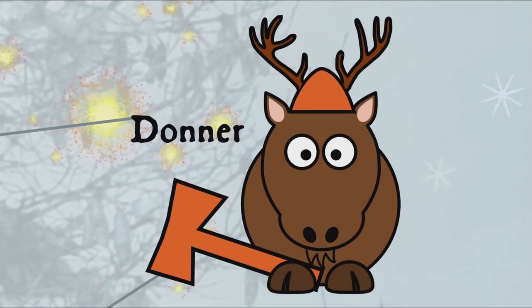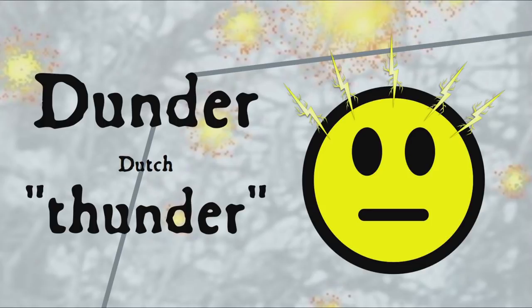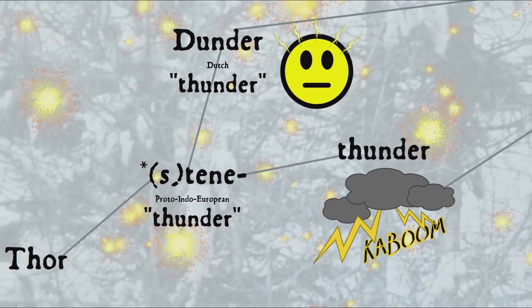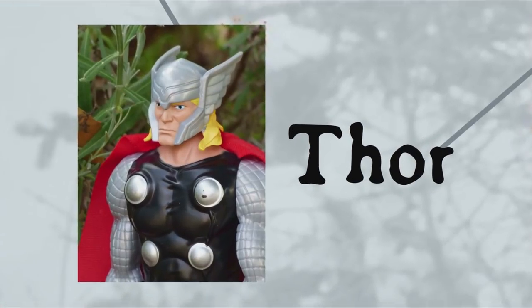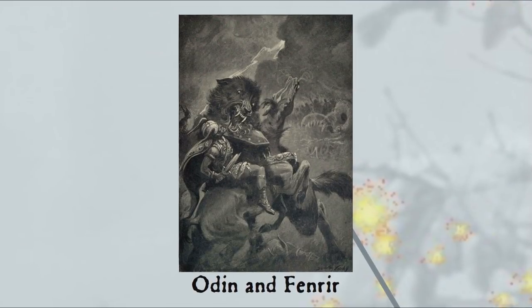Our next reindeer is Donner — or is it? In the original Clement Clarke Moore poem it's Dunder, though you needn't feel like a dunderhead for not knowing that, as Donner is today the most common form. Dunder is the 19th-century Dutch spelling for the word meaning thunder, going back to the Proto-Indo-European root stene meaning thunder — and English thunder also comes from this root. Donner is the German form. Also related is Thor, Old English Thunor, the Norse god of thunder. In Norse myths, Thor's father Odin meets his doom in the jaws of the monstrous wolf Fenrir, whose name means Fendweller.